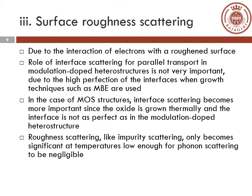Interface scattering or surface roughness scattering is due to the interaction of electrons with a roughened surface. The role of interface scattering for parallel transport in modulation-doped heterostructures is not very important due to high perfection in interfaces when growth techniques such as molecular beam epitaxy are used. In the case of MOSFET structures, interface scattering becomes more important since the oxide is grown thermally and the interface is not as perfect as in the modulation-doped heterostructure. Roughness scattering, like impurity scattering, only becomes significant at low temperatures because phonon scattering is negligible.